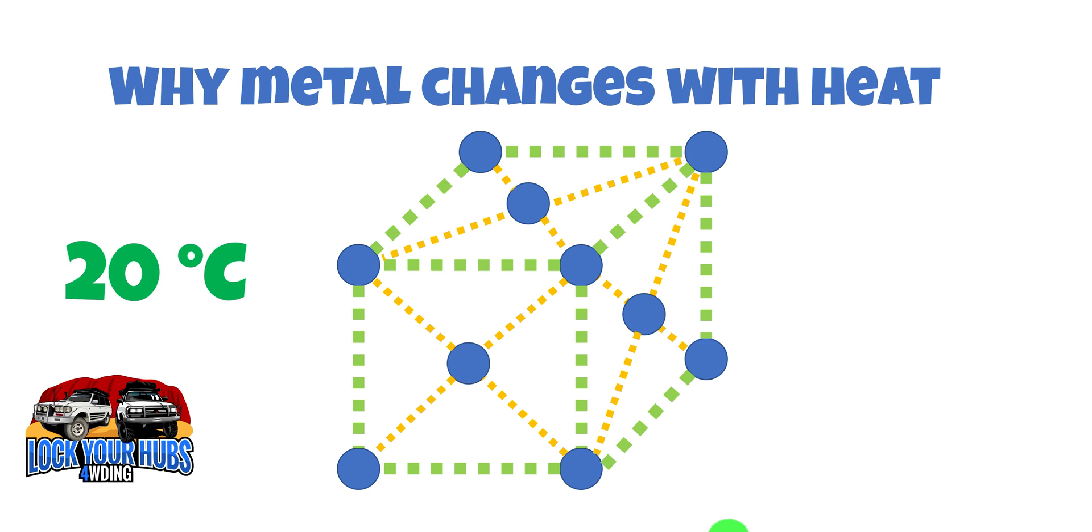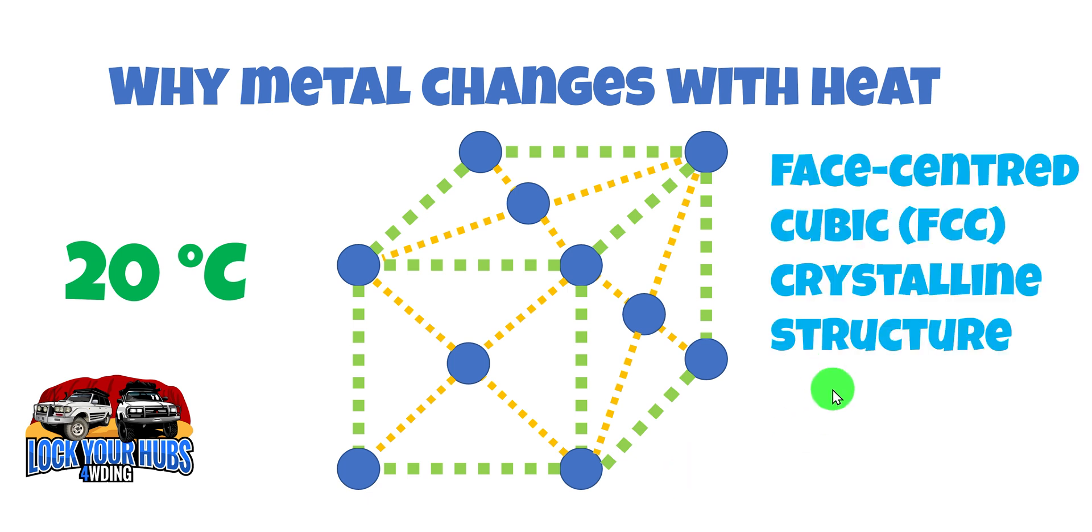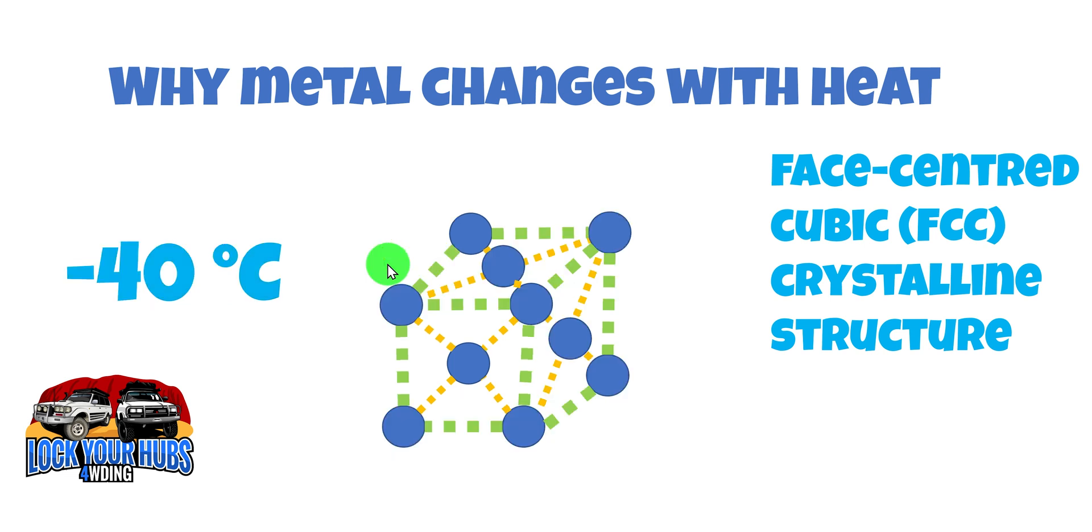So why would the diameter of your bearing race get smaller when you cool it down? So metals have a defined crystalline structure. Now this one for steel is called the face-centered cubic crystalline structure. But the main thing you need to understand is at 20 degrees, there'll be a certain distance between those molecules. When you cool it down to say negative 40, and this is an exaggerated example of course, they get a lot smaller. So it actually shrinks when you cool it down or inversely expands when you heat it up from the current temperature it's at.